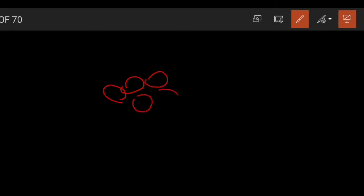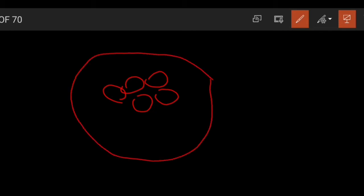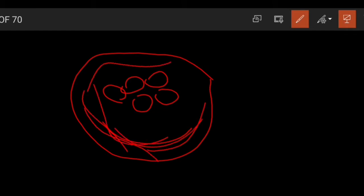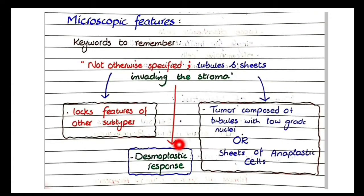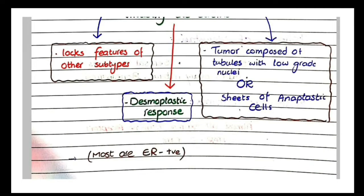What is desmoplastic response? In invasive ductal carcinoma, the tumor cells that invade the basement membrane are close to one another — in tubules or sheets. When they invade, they induce the surrounding stromal tissue to develop a lot of collagen and fibrous tissue. This thickening of collagenous tissue surrounding the tumor cells is called desmoplasia. Remember that most invasive ductal carcinomas are ER positive.